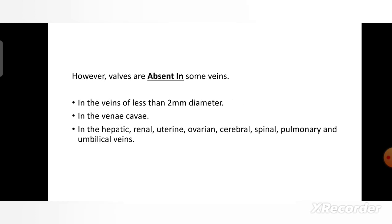Since venous pressure is low, valves are of utmost value in the veins. However, valves are absent in some veins — for example, veins of less than 2 mm diameter, in the vena cava, in the hepatic, renal, uterine, ovarian, cerebral, spinal, pulmonary, and umbilical veins.